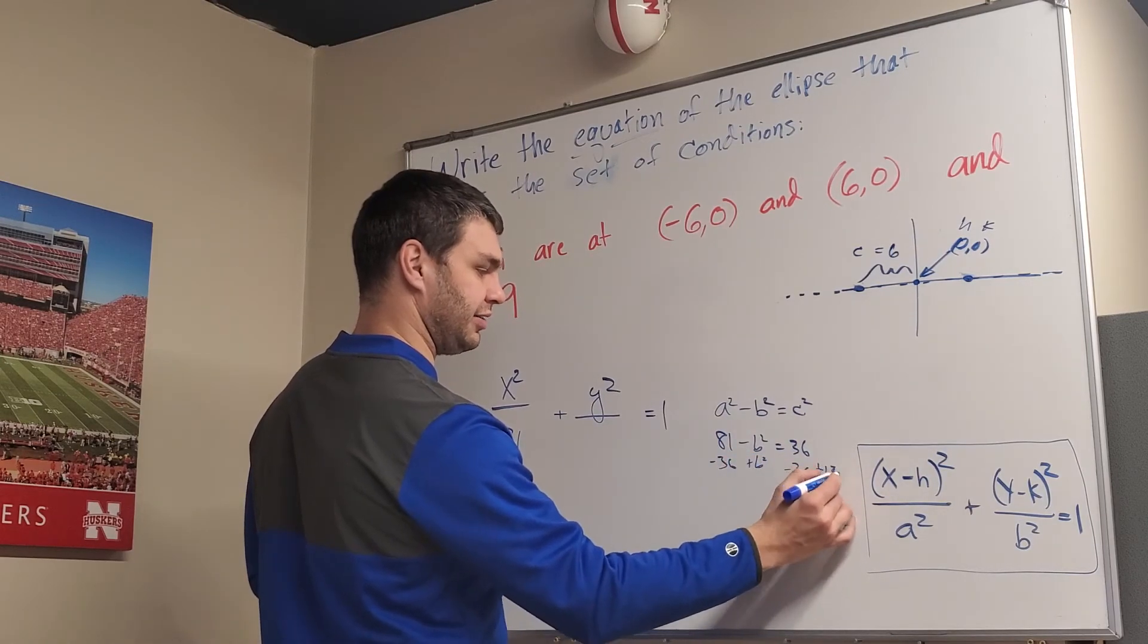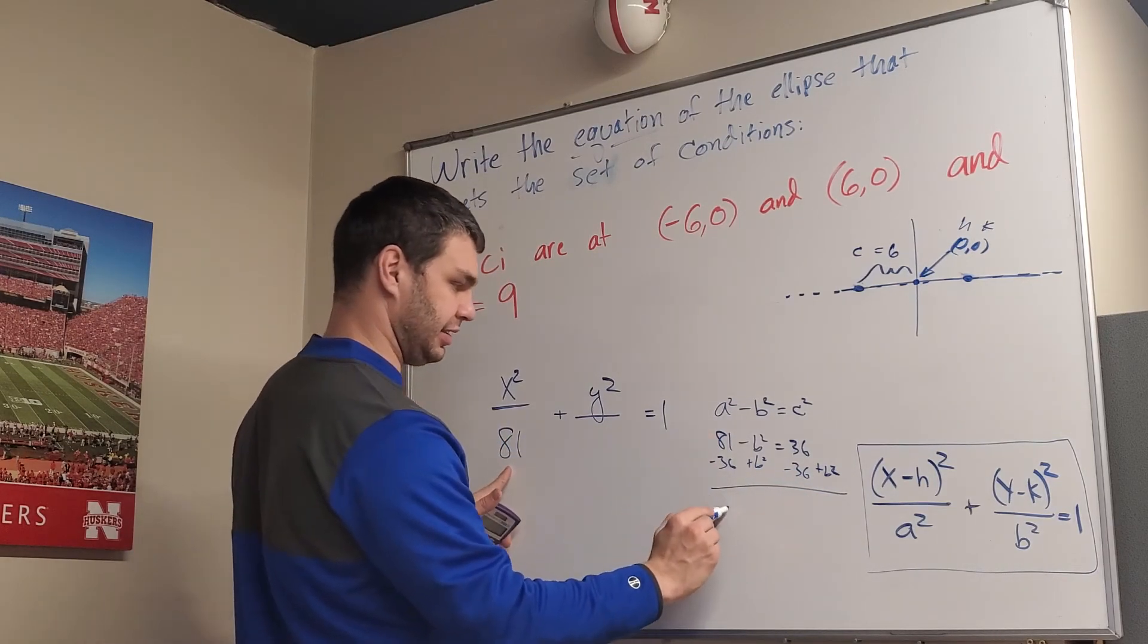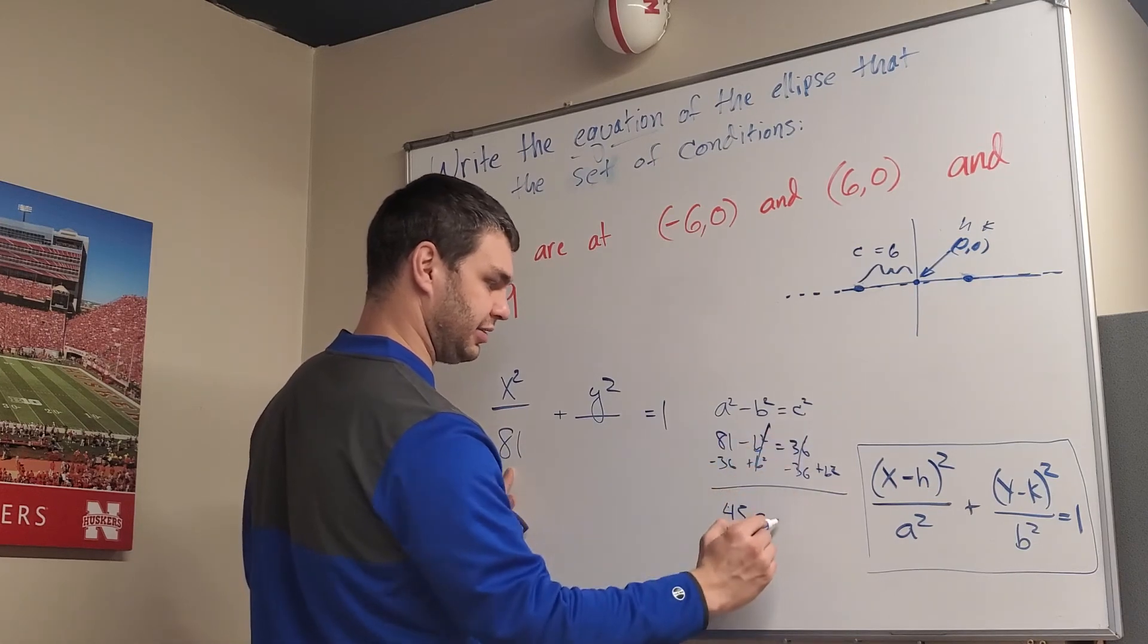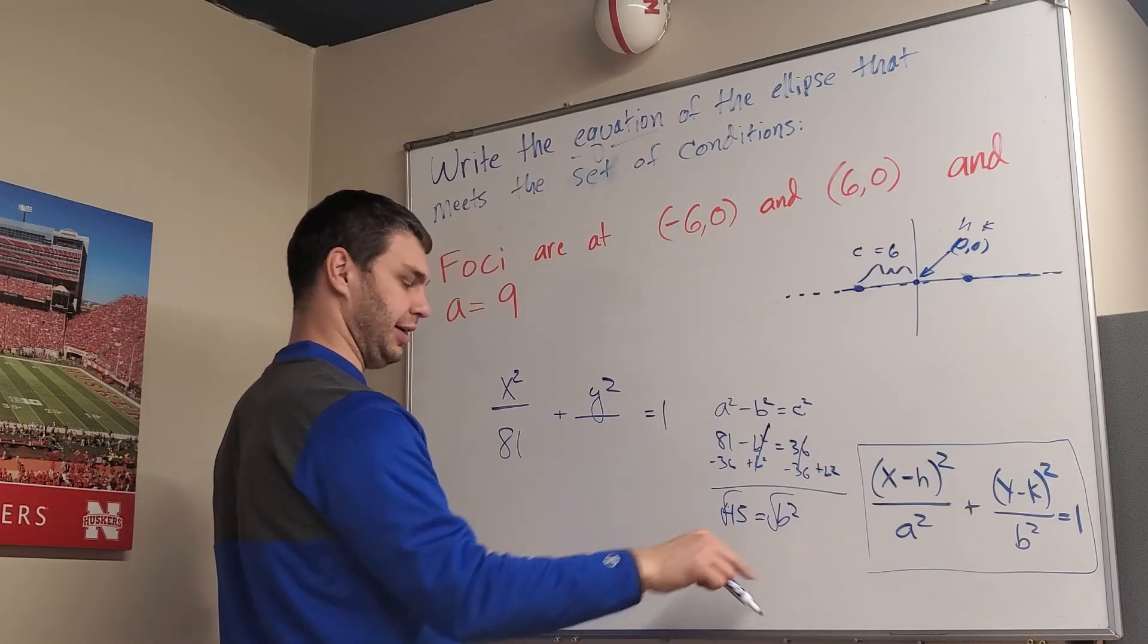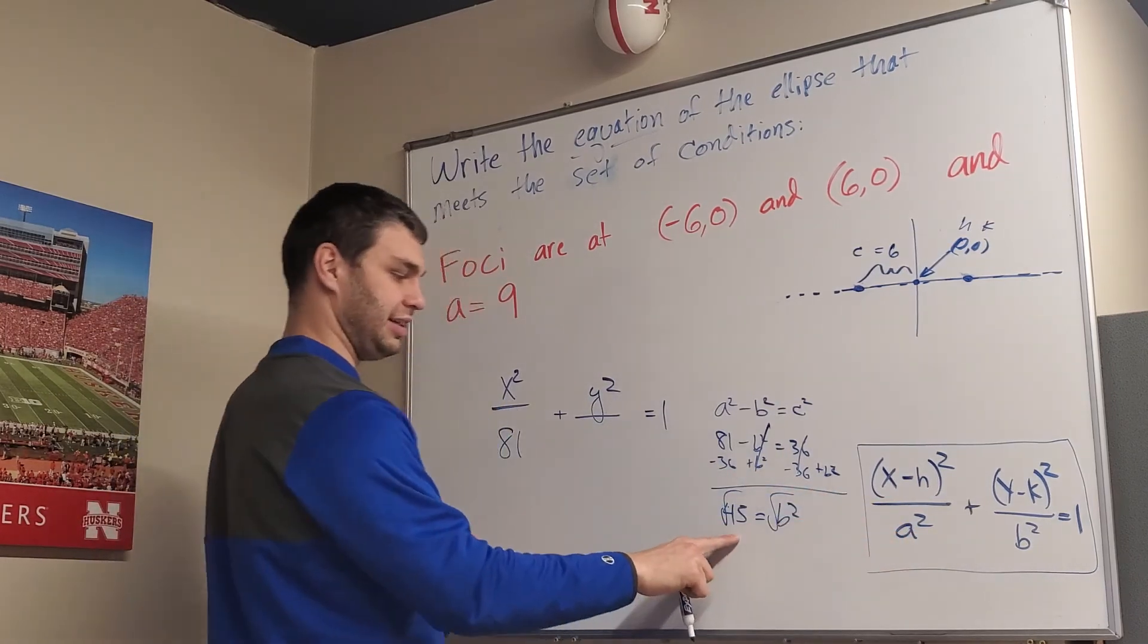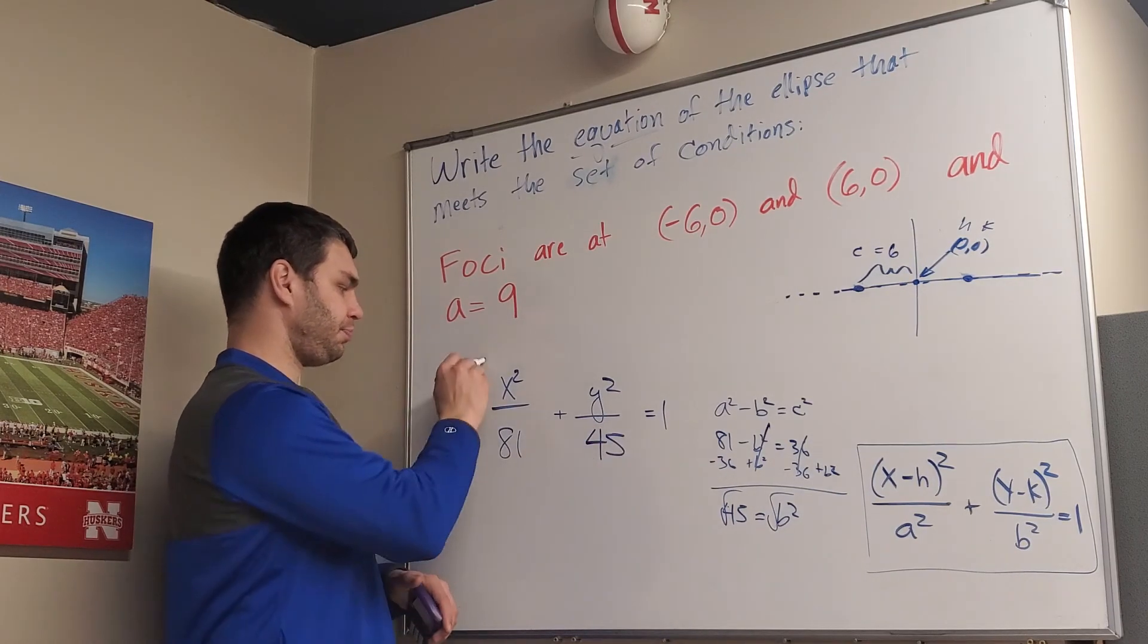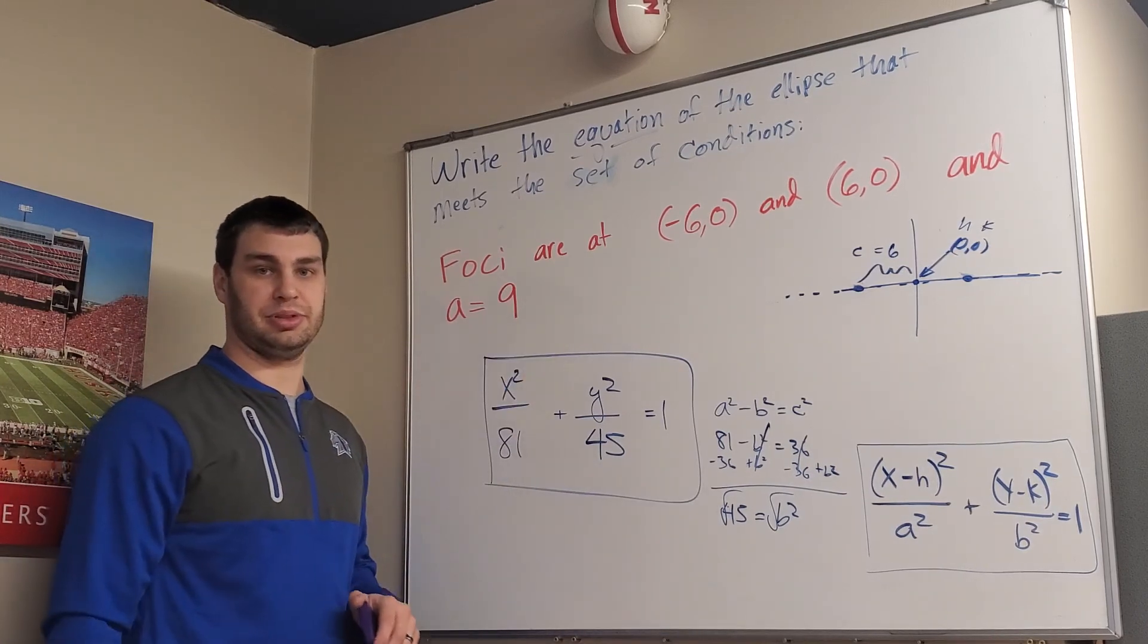So if I subtract 36 on both sides and add b² over, this now gives me 81 - 36 is 45 equals b². So the square root of 45 is going to be b, but I don't really even need b, I just need b². So I just take this 45 and pop it right in there, and that is the equation that satisfies this ellipse.